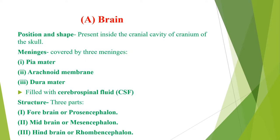Now we will discuss the brain. The brain is present inside the cranial cavity of the skull and is covered by three meninges, which are membranes around the brain: pia mater, arachnoid membrane, and dura mater. Pia mater is the inner thin vascular lining, arachnoid membrane is the middle thin vascular lining formed of reticular connective tissue, and dura mater is the outer thick fibrous membrane lying along the inner side of the cranium.